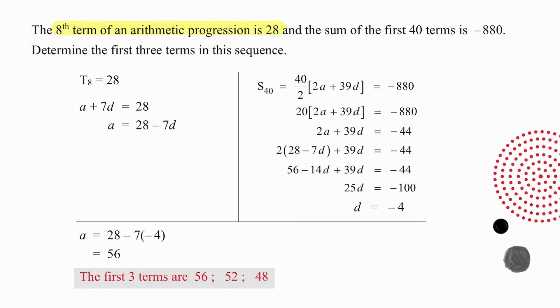We take each bit of information as we see it, so we know that A plus 7D is 28. That enables us to work out a value for A. Now we go to the information about the sum of 40 terms is minus 880. We substitute that information carefully into the formula, and we work out that 2A plus 39D equals minus 44. We bring in the value of A that we worked out earlier, and substitute into the same formula that we've just been working with, this value of A.